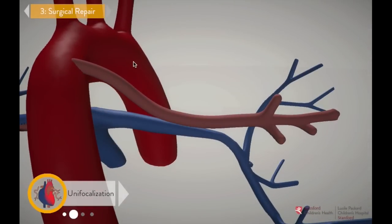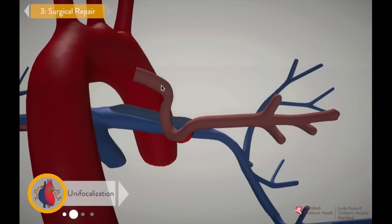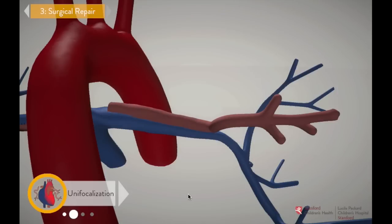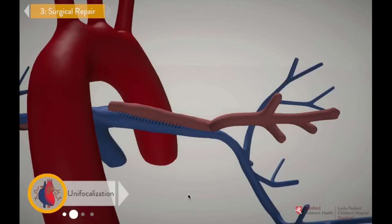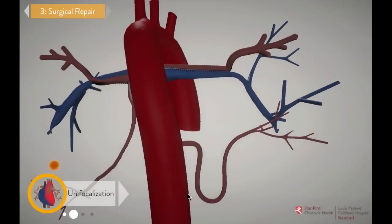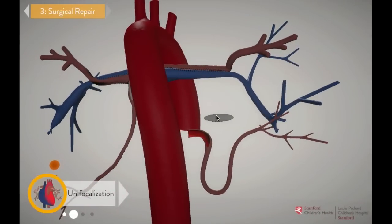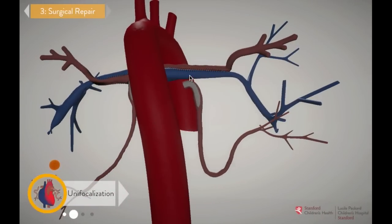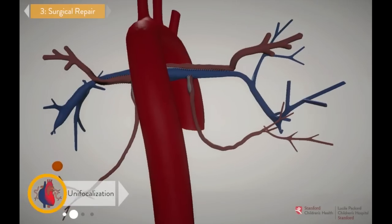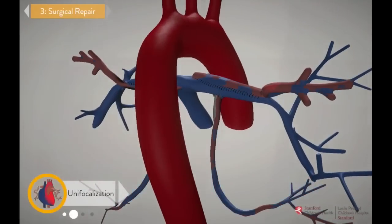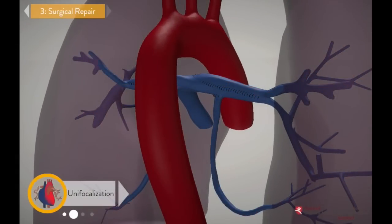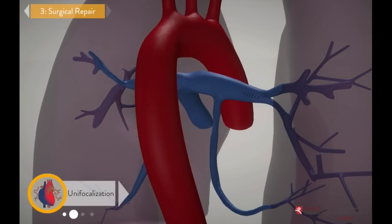Now repeat the process with the two collaterals on the other side. You've repaired the pulmonary arteries. Now they'll grow and strengthen over time, which will allow more blood to flow from the heart to the lungs.